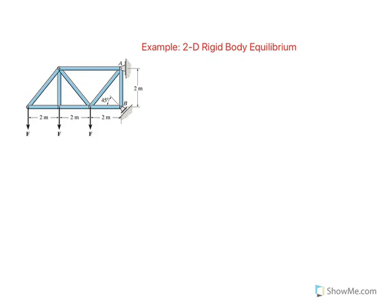Here we want to look at another example of a two-dimensional rigid body. We have a truss being supported by a pin at A and a roller at B, but this roller is not on a horizontal surface — it's at an angle of 45 degrees. The objective is to find the reactions developed at pin A and the roller at B. The forces applied at the truss are set equal to 200 newtons.